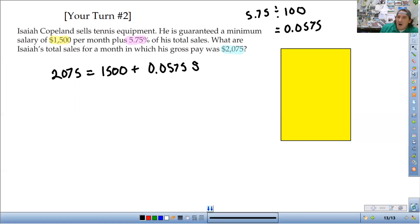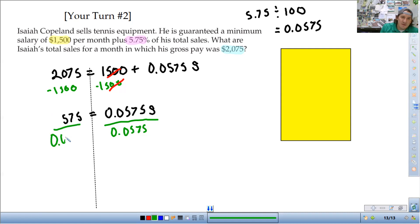Times, we don't know. We are looking for that. We're going to use S for sales. So all I need to do is solve this equation. First thing I'm going to do is subtract 1,500 from both sides. So minus 1,500. So 2,075 minus 1,500 is 575.